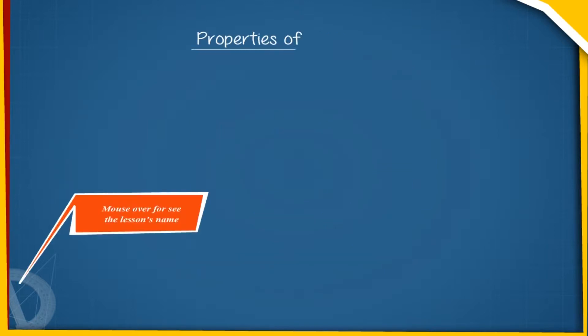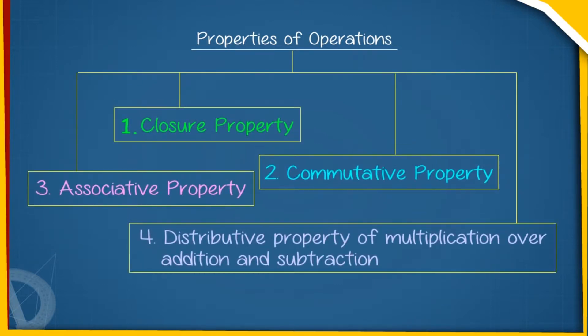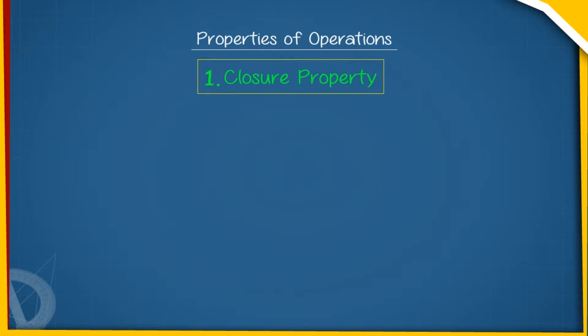Properties of Operations: There are different properties of operations for rational numbers. 1. Closure Property: For rational numbers X and Y, X plus Y, X minus Y, X multiplied by Y, and X divided by Y will also be rational numbers.